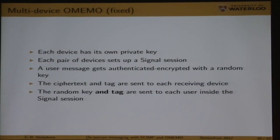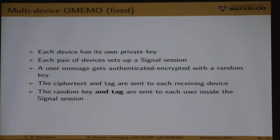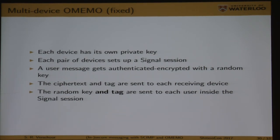There is a fix, and it's a very small one. To prevent this attack, the user must also send the authentication tag of the message inside the signal session. If Eve then injects her own message, the tag Bob receives will no longer match. When I reported this, the developers had it fixed within a couple of hours — really nice to see the analysis actually having an effect.